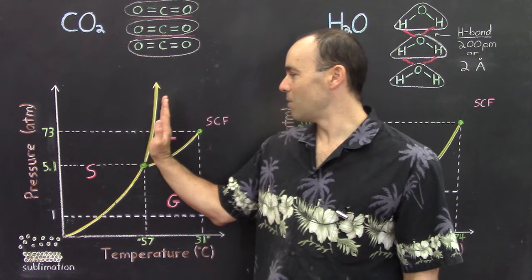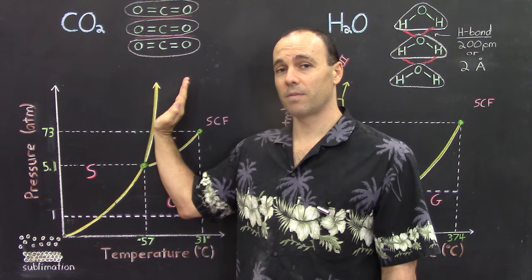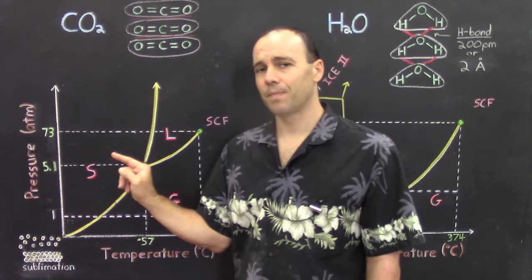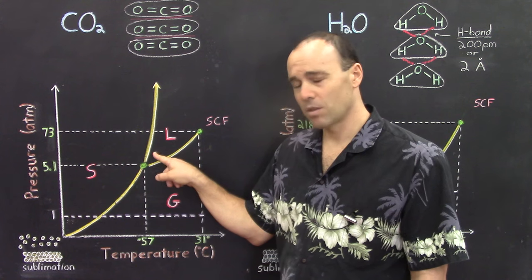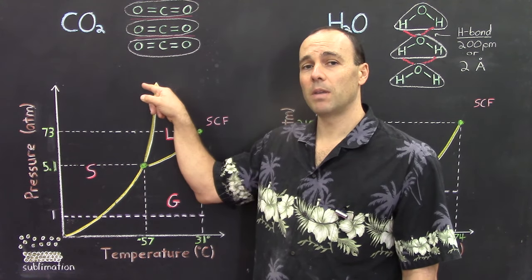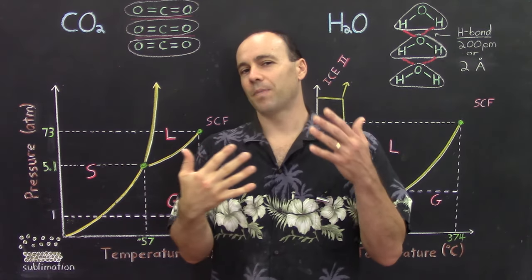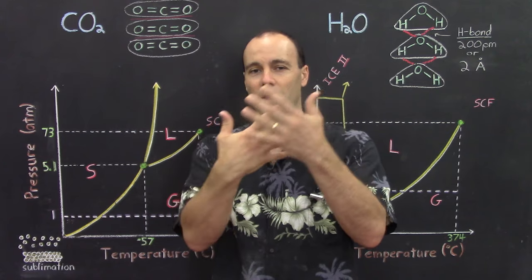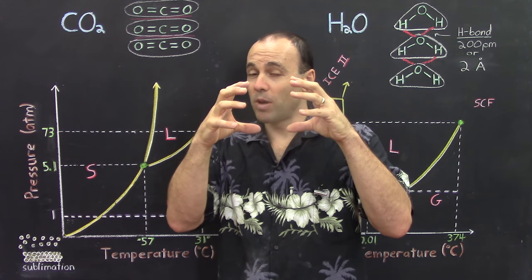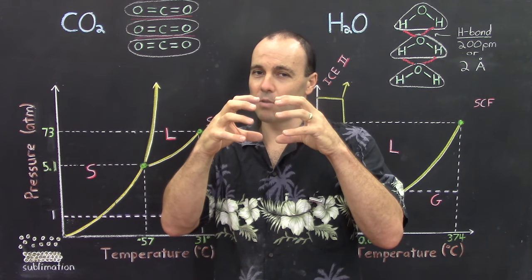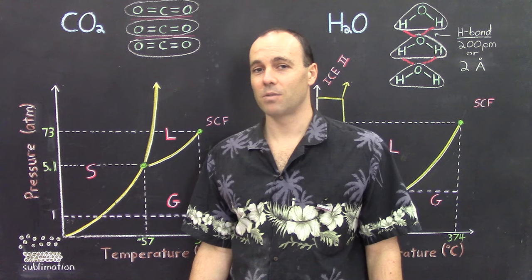Now one more thing about carbon dioxide's phase diagram: the shape of the melting curve. It is a positively oriented curve. If you have liquid carbon dioxide and you increase the pressure while keeping the temperature constant, it will transition into the solid phase. This makes sense because if you have a liquid where particles have the freedom to slide around and you increase the pressure, you're bringing particles closer together and locking them into the configuration of a solid. So increasing the pressure can cause freezing to occur for carbon dioxide.